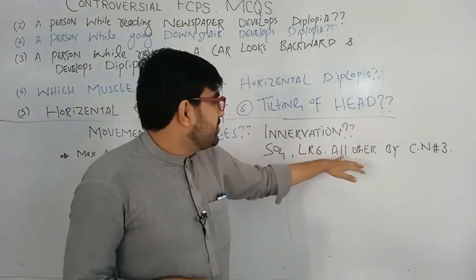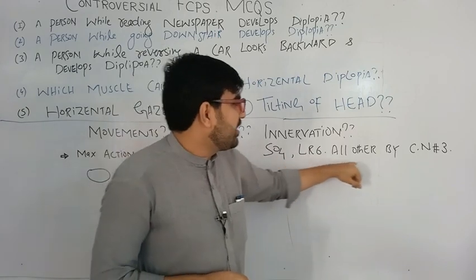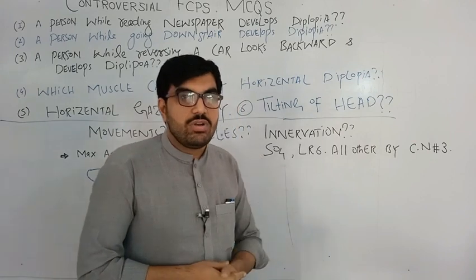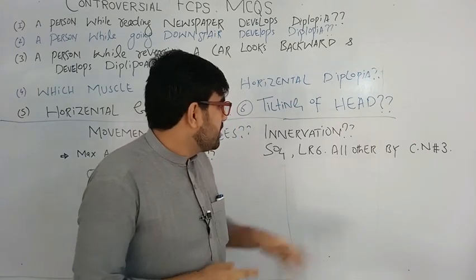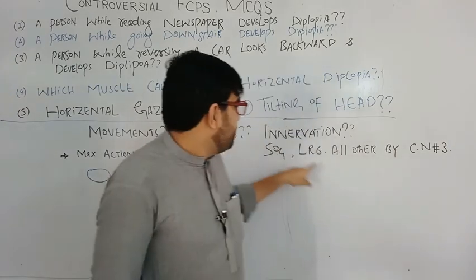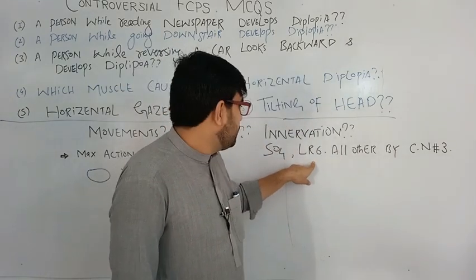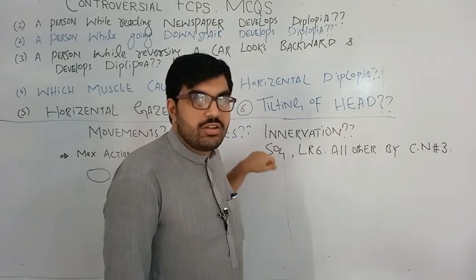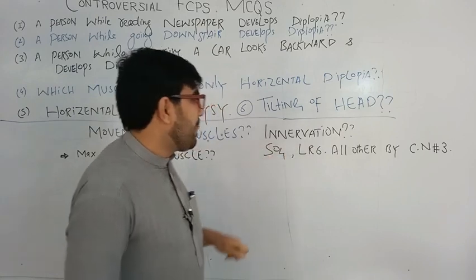There are MCQs regarding nerve supply — SO4, LR6, and all others by cranial nerve 3. The extraocular muscles are supplied by cranial nerve 3 except lateral rectus by 6th nerve and superior oblique by 4th nerve — the trochlear nerve. These two are very tricky and we will explain them shortly.